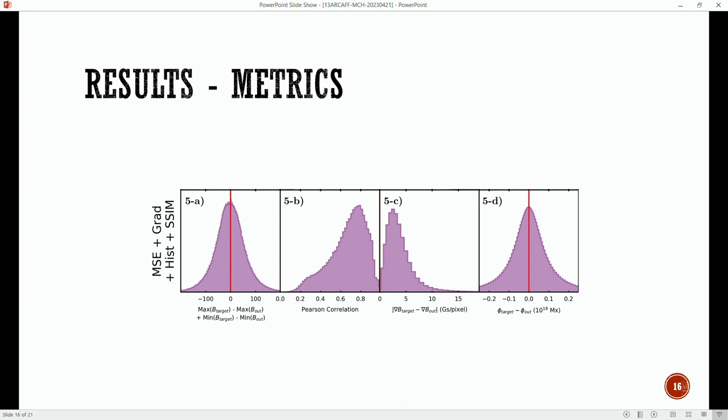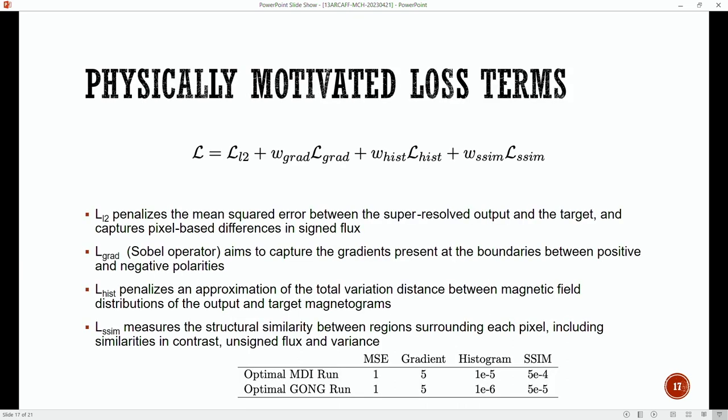What are these? The idea is that we have physically motivated losses. It's not really physically informed networks like we've spoken about this morning, but just that we have things we know we need to conserve or at least try and conserve, so we put them in the loss. Standard loss L2. Gradient: what we do is a Sobel operator on the input images and then try to minimize the difference of that pixel by pixel. We have a histogram loss—this is quite interesting. We have a differentiable histogram function which tries to minimize the difference between the distributions of the input and target magnetograms, so we try and maintain the distribution of the HMI intensity pixels from the lower resolution MDI or GONG.